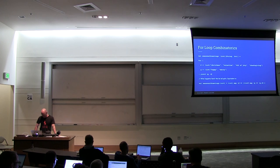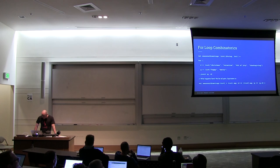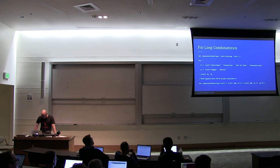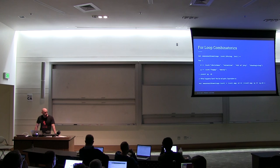Scala's for-comprehension is syntactic sugar for map and flatMap. What you see in the for loop is equivalent to a flatMap followed by a flatMap followed by a map — Scala figures out which one you need.